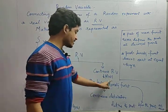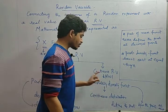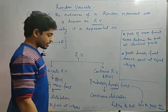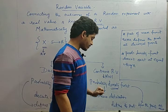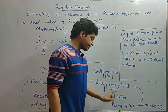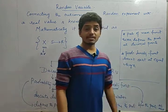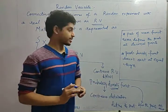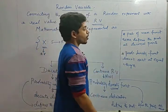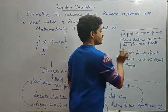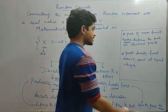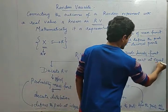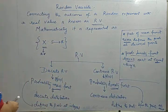For a continuous random variable, we denote the probability density function as small f(x). Through a continuous random variable we get a density function, and through a discrete random variable we get a mass function. The probability density function always defines the probability between points — that means at decimal points. Always remember: the probability mass function never defines probability at decimal places, and the probability density function does not exist at an equal sign.